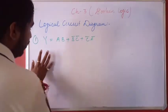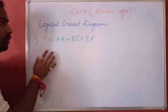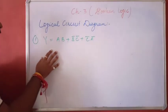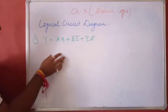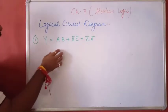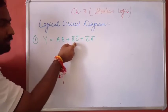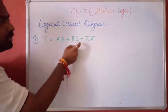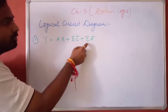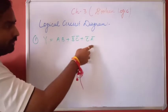This is question number 1. You have to draw the logical circuit diagram of this function: AB plus B̄C̄ plus C̄Ā.